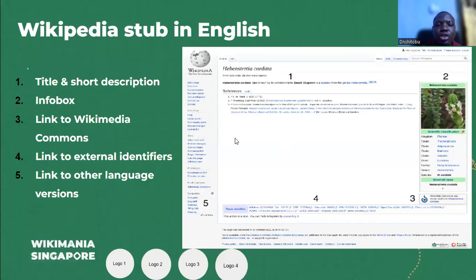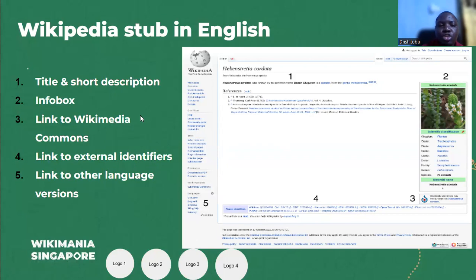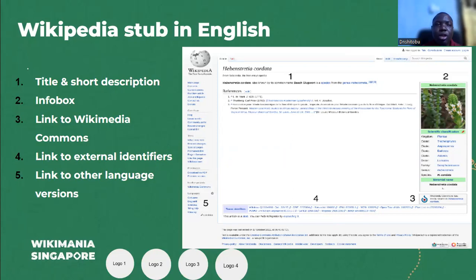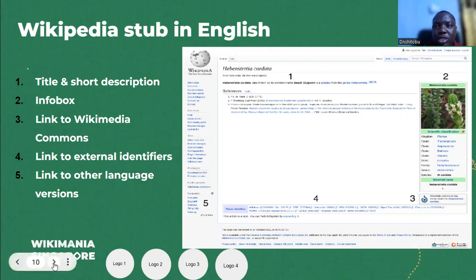Here is an example of using the Jupyter notebook to create an article on the English Wikipedia — we have an article on Heberstratia data. The Jupyter notebook gives you the chance to add a title, a short description about the flora or fauna, and also add an info box which is Wikidata-powered. You can add an image of the plant or animal captured from iNaturalist and imported to Commons, connect to external identifiers, and link to other Wikipedia articles in different languages.